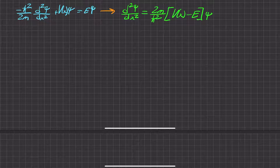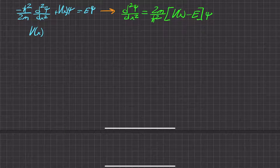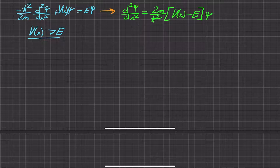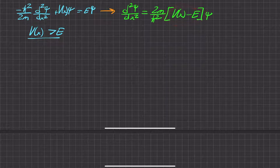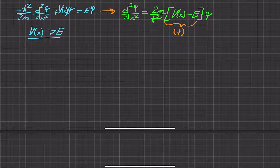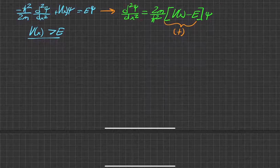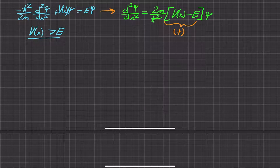We can begin with the case where the potential energy is greater than the energy. If that's true, that means this relationship is going to be positive. So if that's positive, this whole term is positive, which means that the second derivative — the curvature of the wave function — happens to be positive.